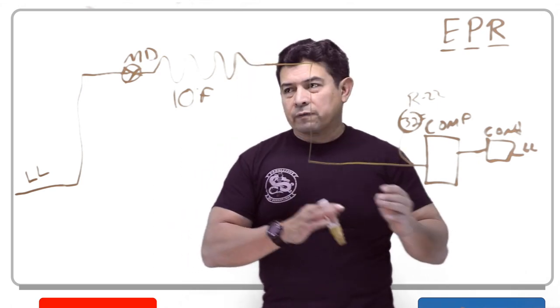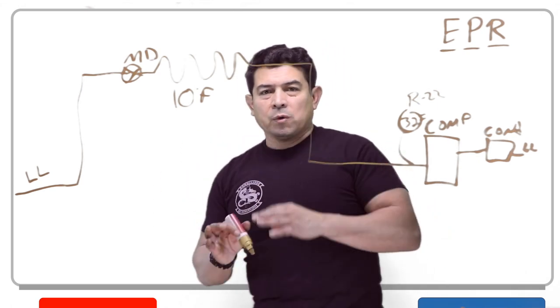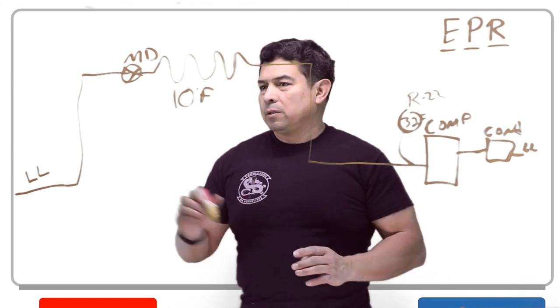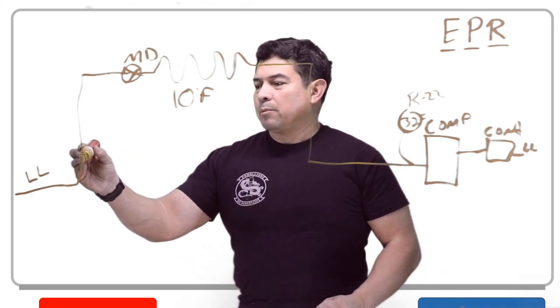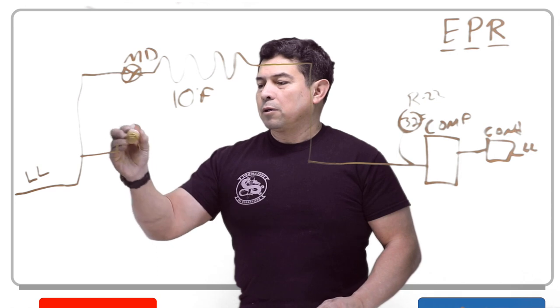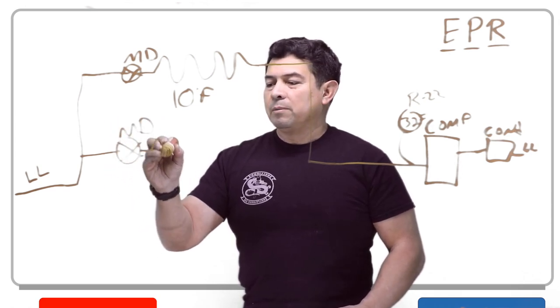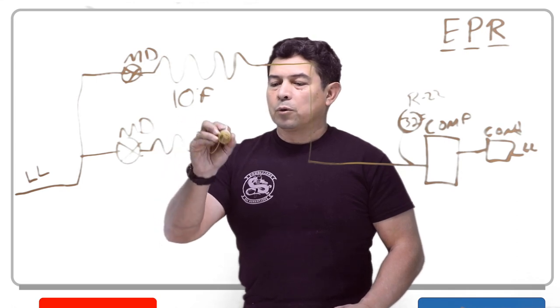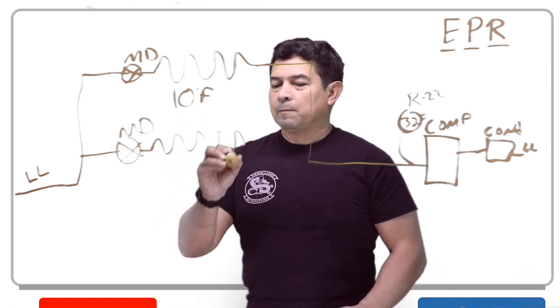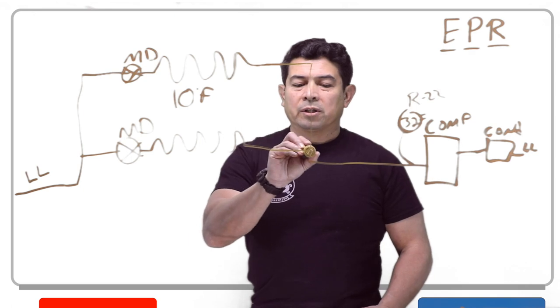But you can't have a compressor for just this, a compressor for another one, and for another one. So what they do is come off of here, go to another metering device, and this metering device comes out to an evaporator like this, and this evaporator hooks up to that.